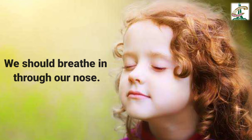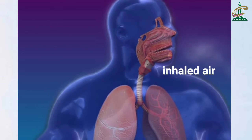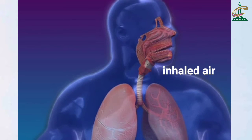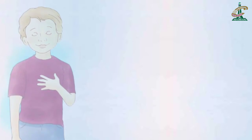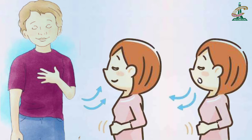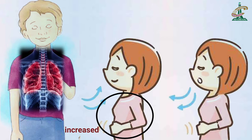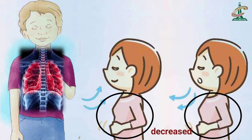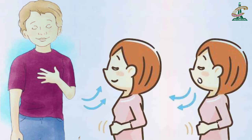The air we breathe in is called inhaled air, and the air we breathe out is called exhaled air. Put your hand on your chest, take a deep breath, and then breathe out. You will notice that your chest size increases and then decreases — these are your lungs expanding and contracting. I hope you have understood the respiratory system.